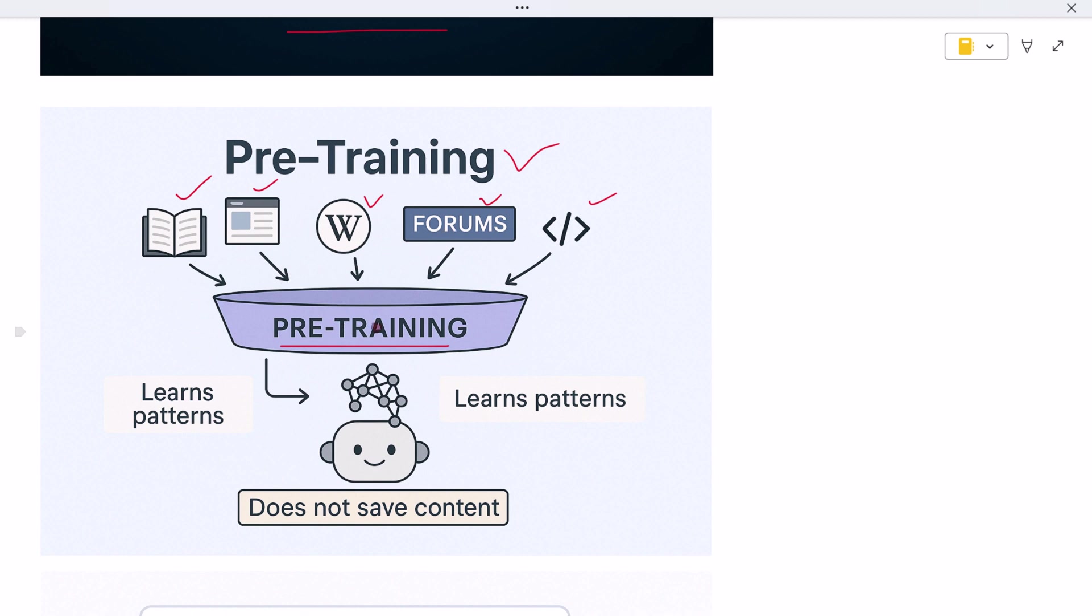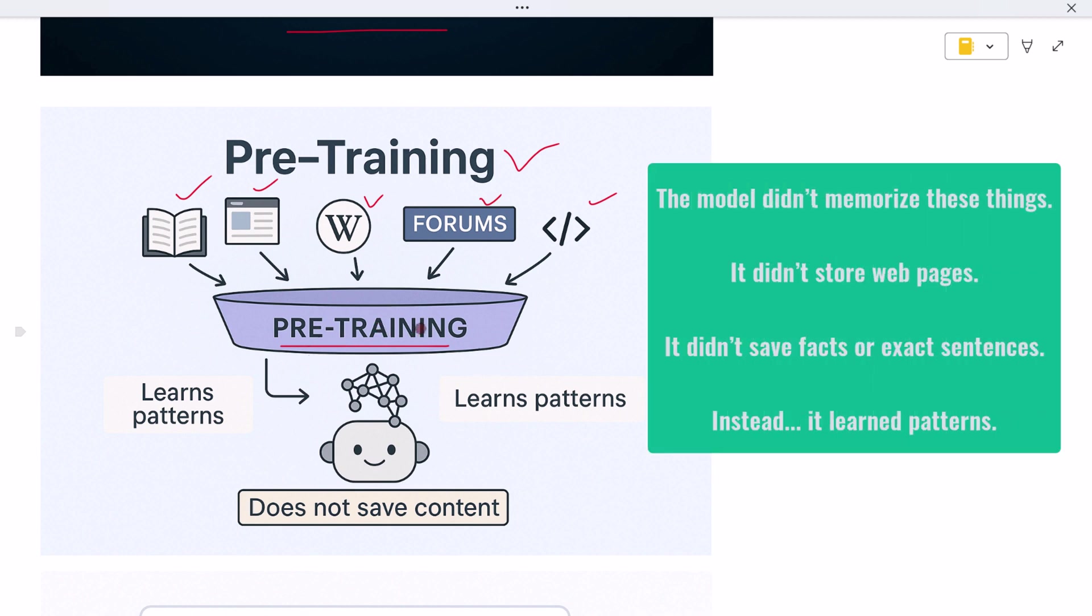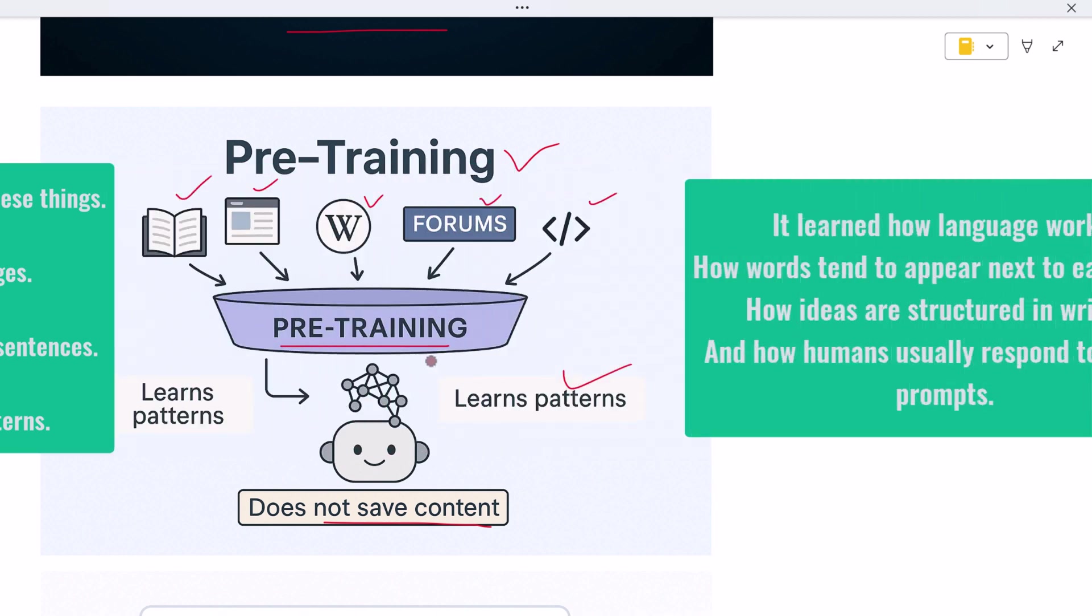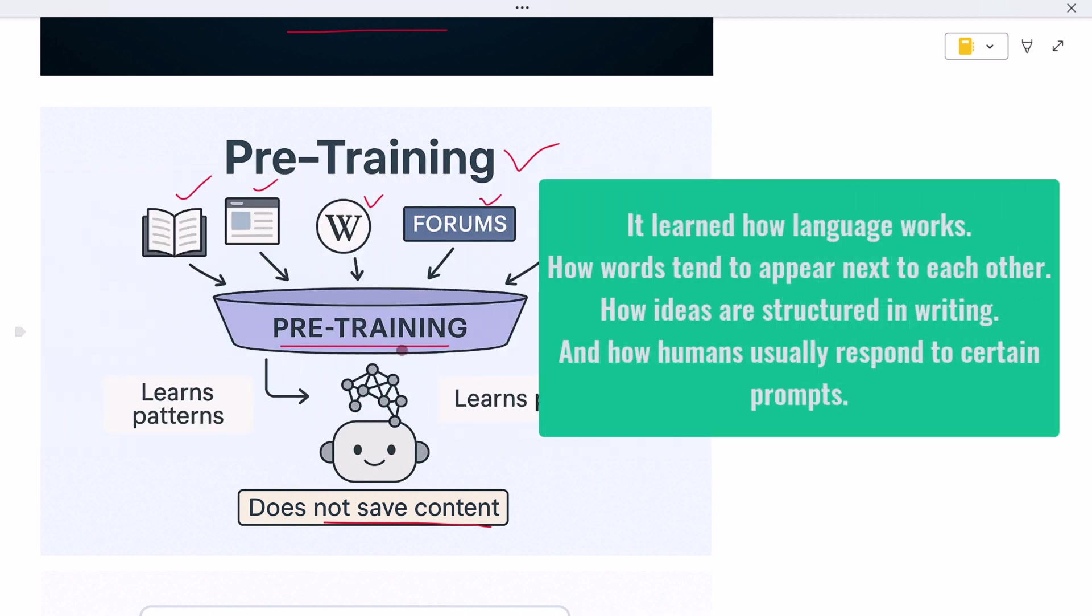Now here's what's important. The model didn't memorize these things. It didn't store web pages. It didn't save facts or exact sentences. Instead it learned patterns. It learned how language works, how words tend to appear next to each other, how ideas are structured in writing, and how humans usually respond to certain prompts.